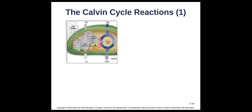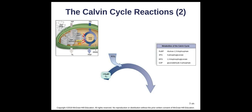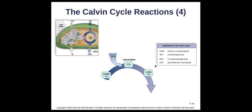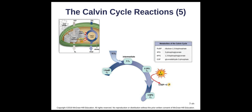Moving from the light reactions — where we made NADPH and ATP — we now look at CO2 going into the Calvin cycle. The very first step is taking carbon dioxide and adding it to RuBP with RuBP carboxylase, also called Rubisco, to make a six-carbon molecule that immediately breaks into the three-carbon molecule 3-PG. So carbon dioxide combines with RuBP to make that six-carbon molecule, which splits into our three-carbon molecule.